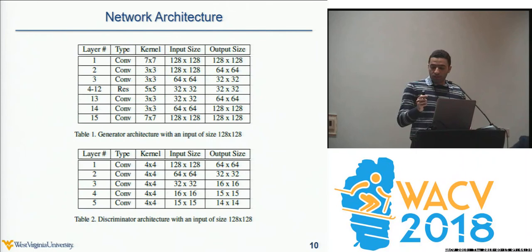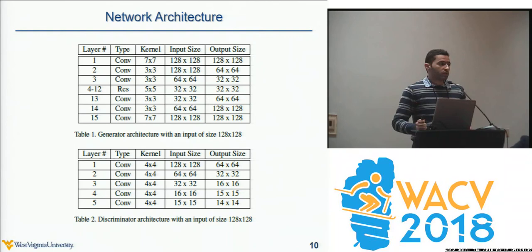Here you can see the architecture of our generator at the top. The discriminator architecture is similar to CycleGAN but with the input and feature map sizes slightly modified.